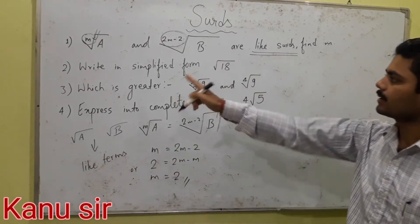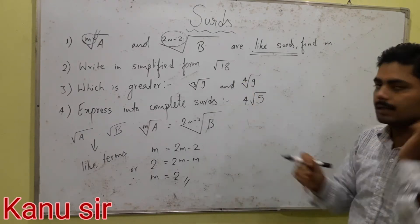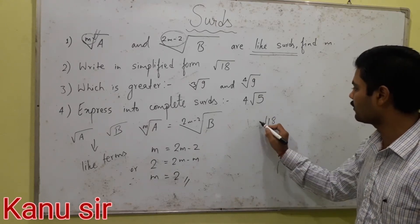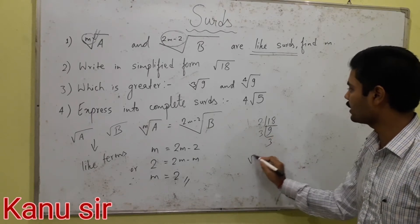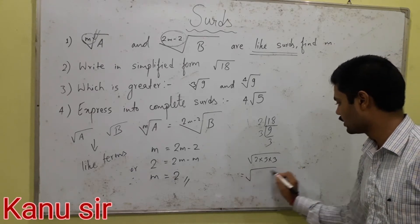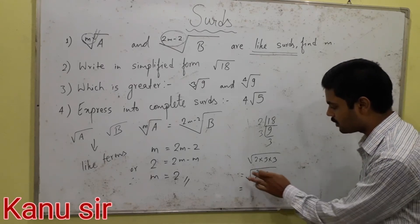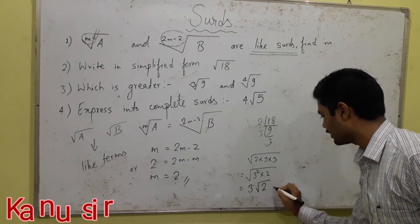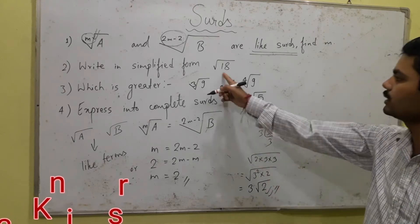Next: write root 18 in simplified form. How to write root 18 in simplified form? Very simple — you take out the prime factors of 18 first. 2 times 9 is 18, and 3 times 3 is 9. Then root 18 can be written as root of 2 times 3 times 3, which equals root of 3 squared times 2. Because 3 has a square power, it can cancel the root and come out, but root 2 remains as it is. So 3 root 2 is the simplified form of root 18.